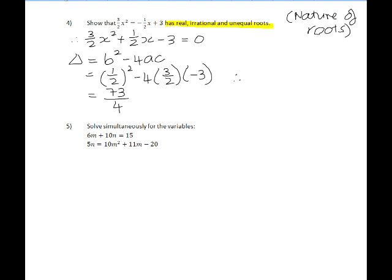So therefore, what can we say about delta? We can say that it's positive. We can say that the square root of delta, if we were to find the square root of 73 over 4, it's not a perfect square. So therefore, the square root of delta is part of the irrational numbers.